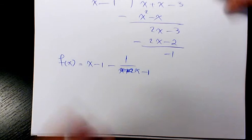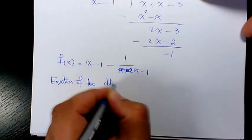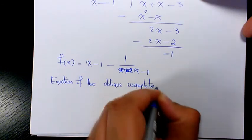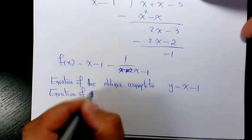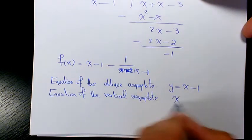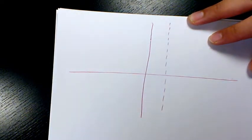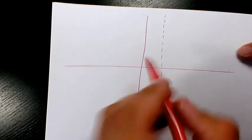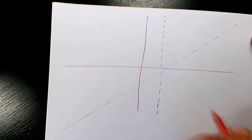So the equation of the oblique asymptote is y = x + 2. Correcting from the long division: the oblique asymptote is y = x − 1, and the equation of the vertical asymptote is x = 1. On the graph, we draw x = 1 as the vertical asymptote and the line y = x − 1 as the oblique asymptote.